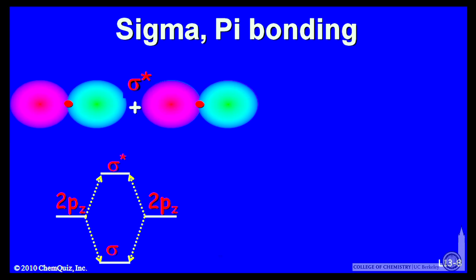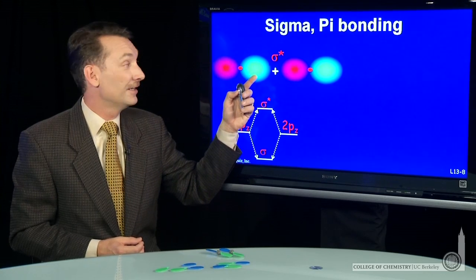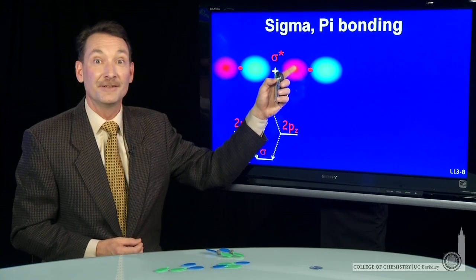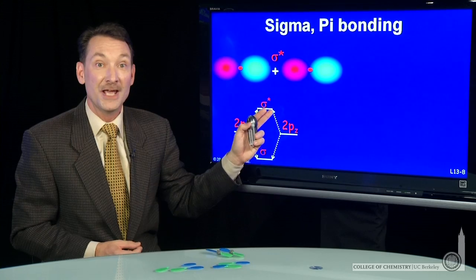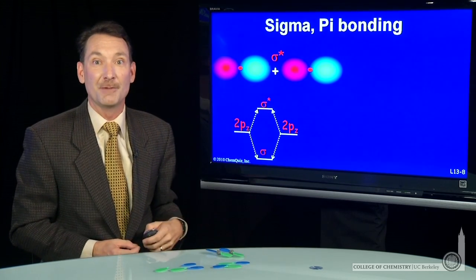Of course, you can add them with the opposite sign, and pz and pz can come together where the amplitudes interfere destructively. I get positive and negative adding to zero amplitude and giving me a node between the two nuclei and get an antibonding orbital.